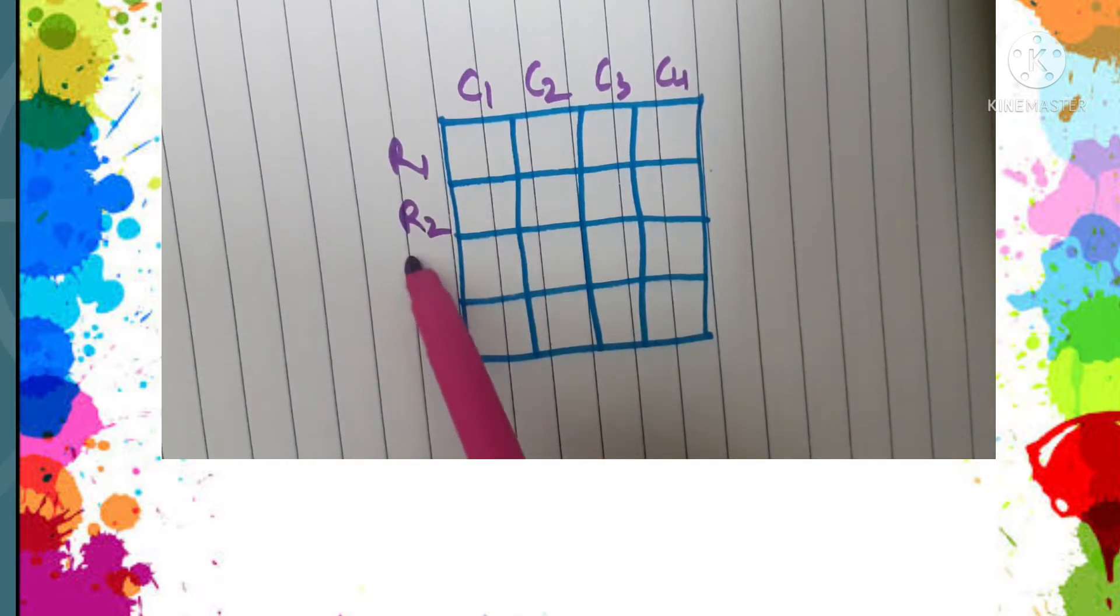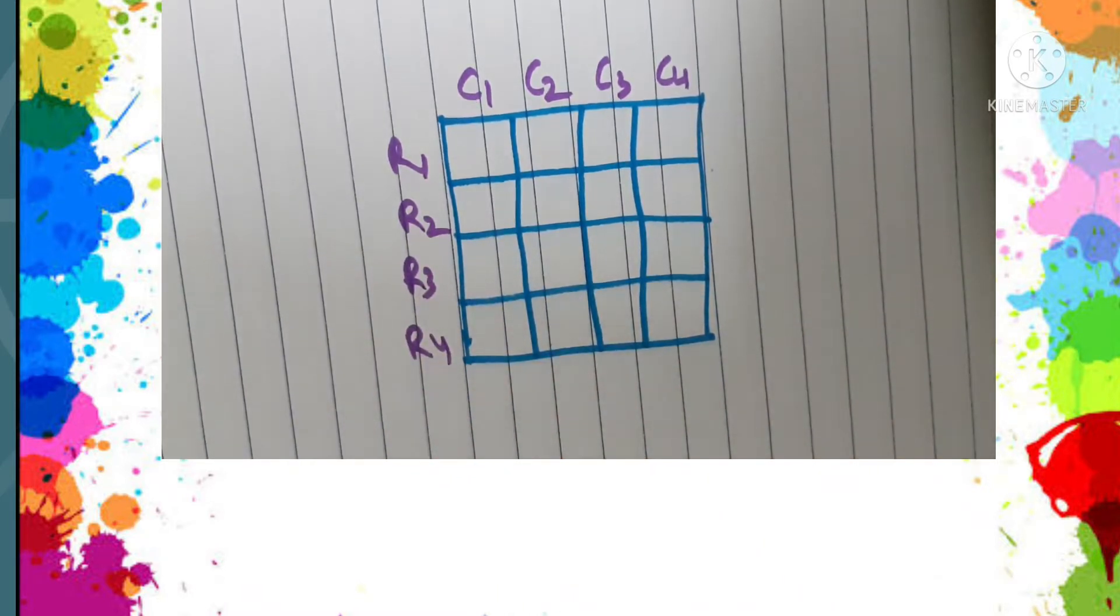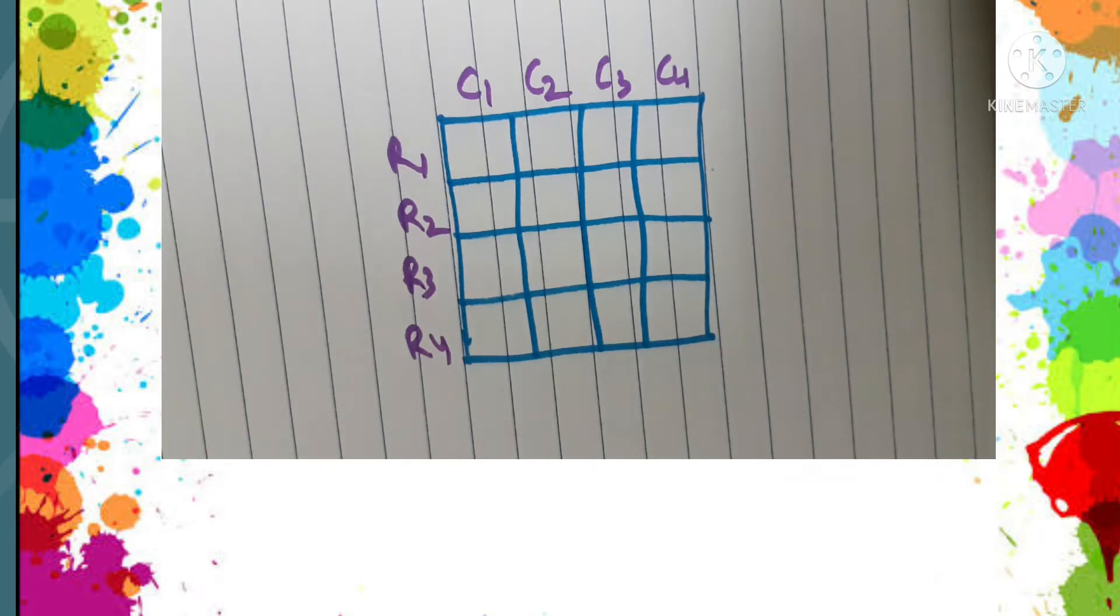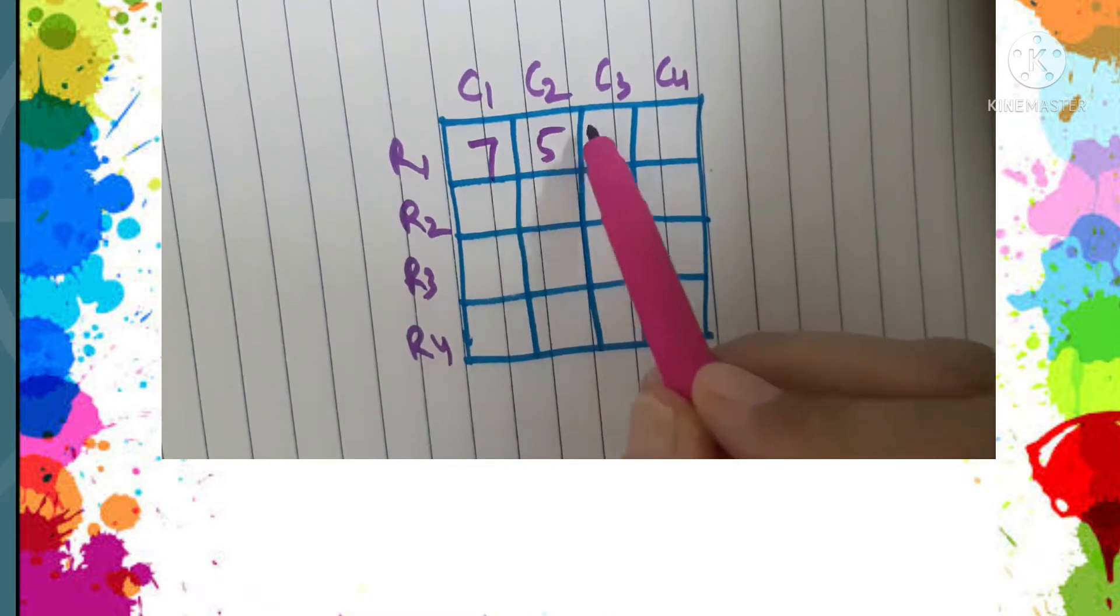R1, R2, R3, and R4. Some numbers are written in these boxes, so we have here seven, five, two, four, three, two, one, zero, two, six, one, six, and zero, eight, one.